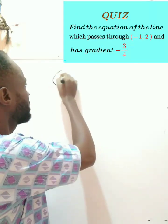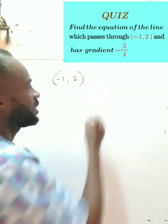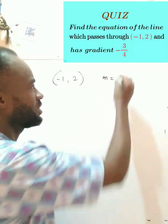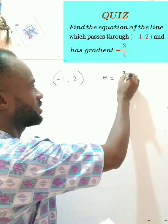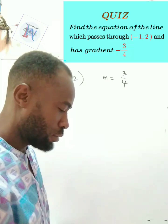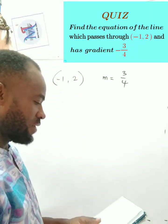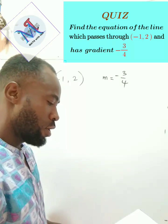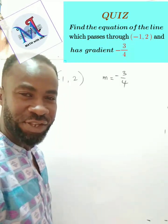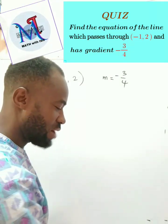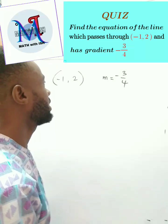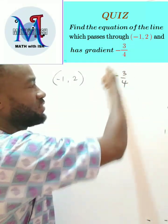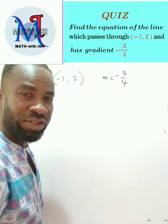We are told that the equation of the line passes through (-1, 2) and the gradient, which I call m, is given as -3/4. So let's solve this particular problem — let's see how to get the equation of the line that passes through this point with this gradient.